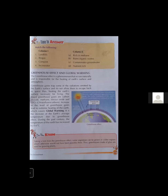Global warming is caused by the greenhouse effect increasing the overall temperature of the Earth. During the past century, the temperature of the Earth has increased by 0.6 degrees Celsius, which is a very large increase in temperature.